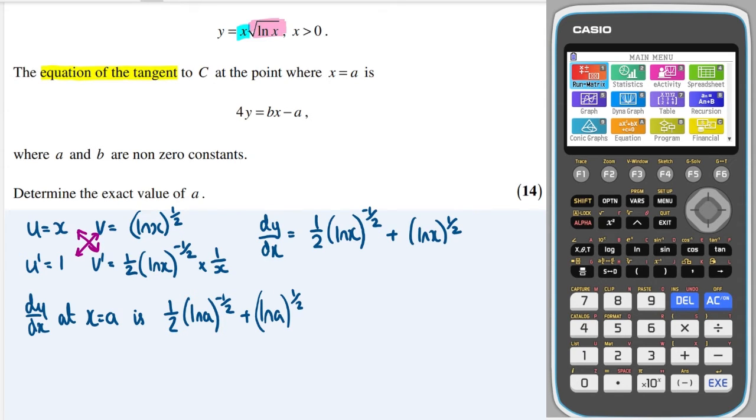Okay, and in order for me to work out a tangent, I need not only the gradient, but I also need an x, y point. I have an x point, so I need to find its corresponding y value. So I'll do that by subbing that into the y equation. So y at x equals a is, subbing a for x, so I get a, open brackets, ln of a, and that is the square root, so that's the power of a half as well.